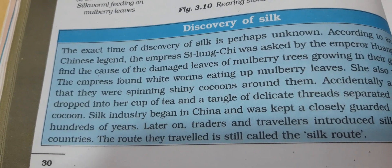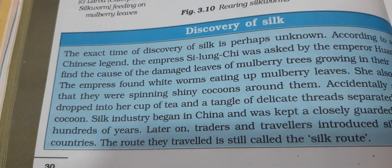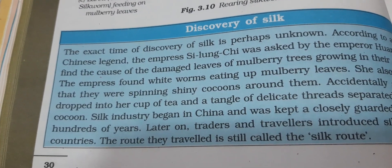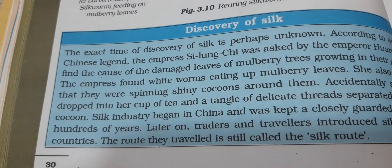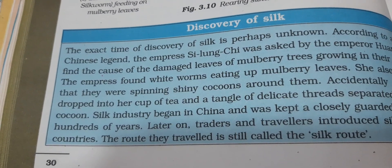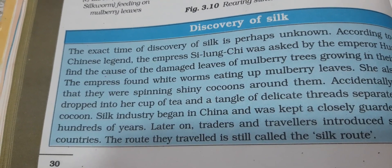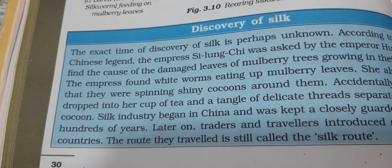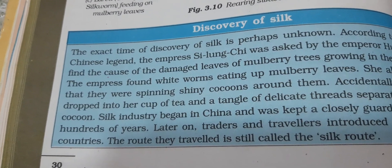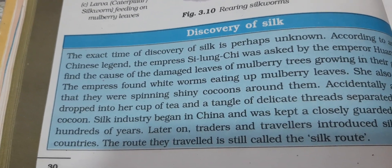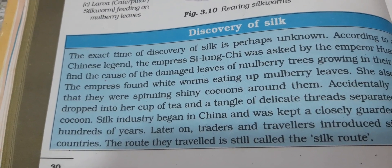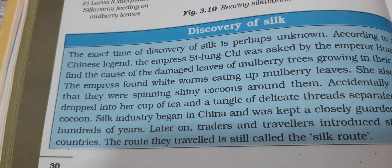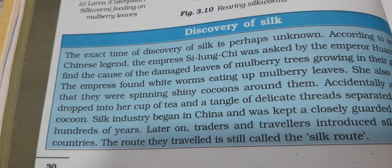Hundreds of years after that, a Chinese princess is believed to have smuggled the eggs of silk moth out of China, and thus the people in Europe and other Asian countries learnt the production of silk from caterpillars. This production of silk from caterpillars is known as sericulture. Silk is mainly produced in China, India, Southeast Asia, and Japan.